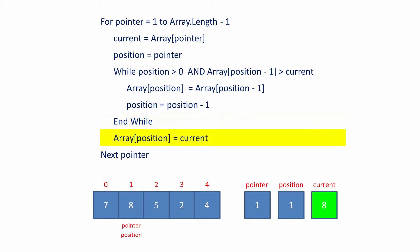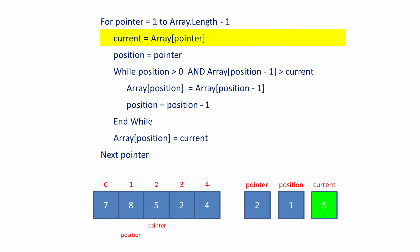The value of the variable current is copied to the element of the array given by the variable position. In effect, the value of 8 has not moved. The value of pointer is incremented to 2. Now it's pointing to the third item in the array. The value of current is changed according to the value of pointer. In this case, current now contains 5.